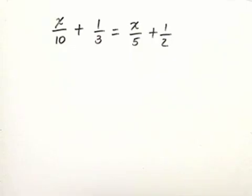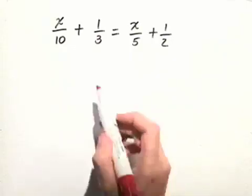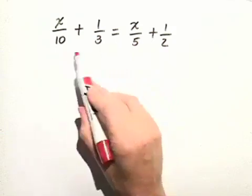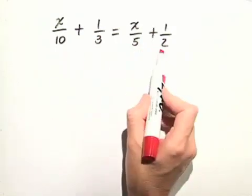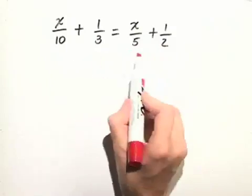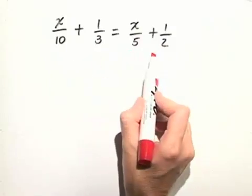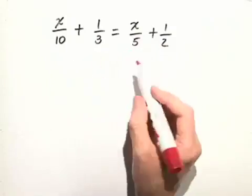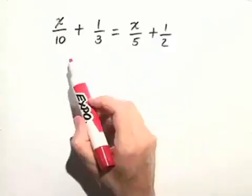We have an equation with fractions. The nice thing about this is that if we look at the denominators, we can choose a number that all of these numbers go into in such a way that it'll clear the fractions in one step.